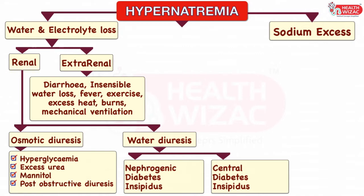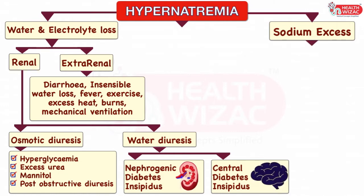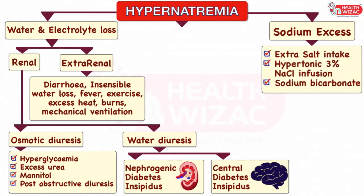Water diuresis can be subdivided into two categories: nephrogenic diabetic insipidus and central diabetic insipidus. In nephrogenic diabetic insipidus, the primary issue is with the kidneys where the receptors fail to respond to ADH. Whereas in central diabetic insipidus, the primary issue is with the hypothalamo-pituitary axis, leading to reduced levels of ADH in the blood. Hypernatremia due to excess sodium going inside the body may be either due to extra salt intake, or in patients receiving hypertonic 3% saline correction, or sodium bicarbonate.